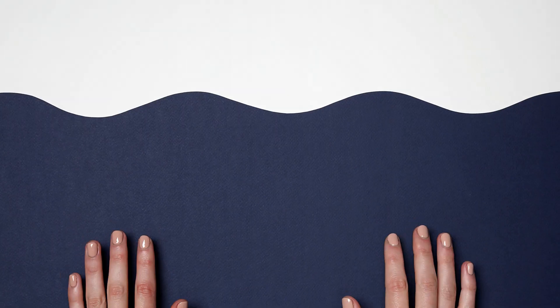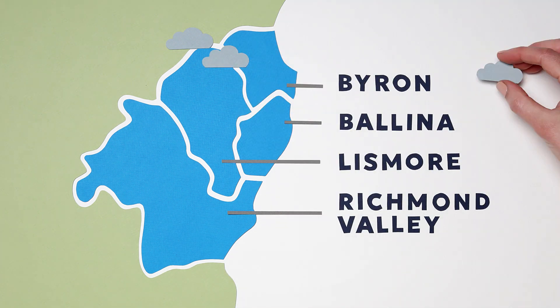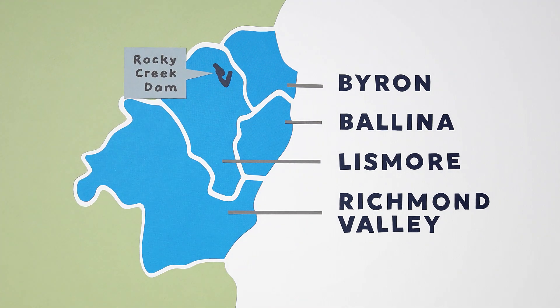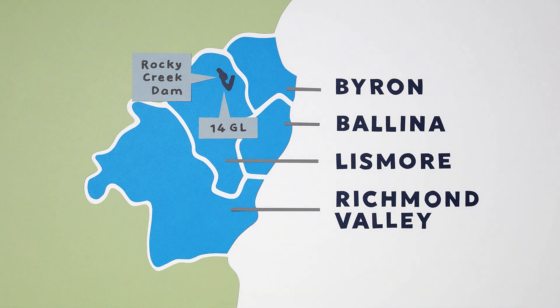To many, our water supply may seem abundant, and here in the Northern Rivers, thanks to our region's historically high and reliable annual rainfall, our region's principal water source, Rocky Creek Dam, has served our community well for decades, despite its relatively modest capacity.